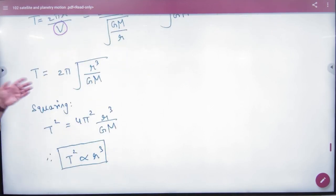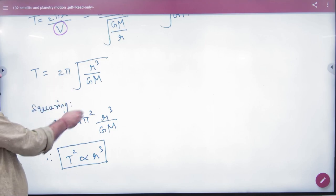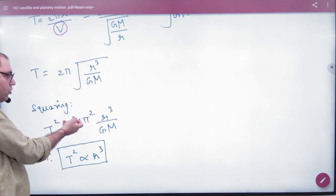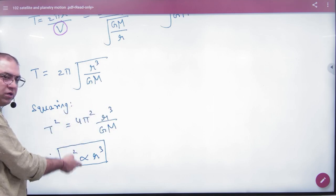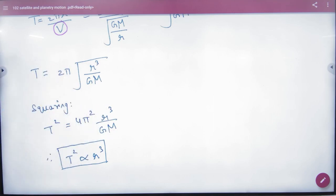Here we are squaring. So T squared is proportional to 4π² r³ over GM. Constants are all constant, so T squared is proportional to r cubed - Kepler's third law. This is Kepler's third law proof.